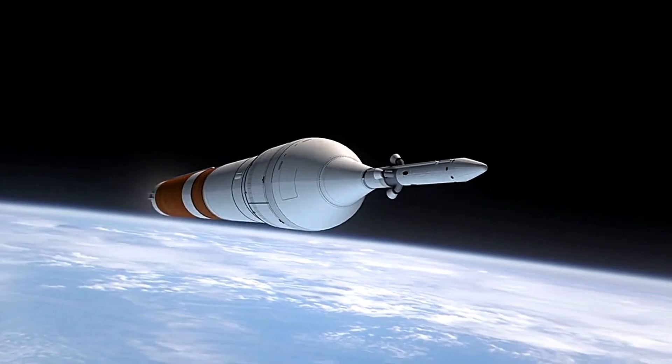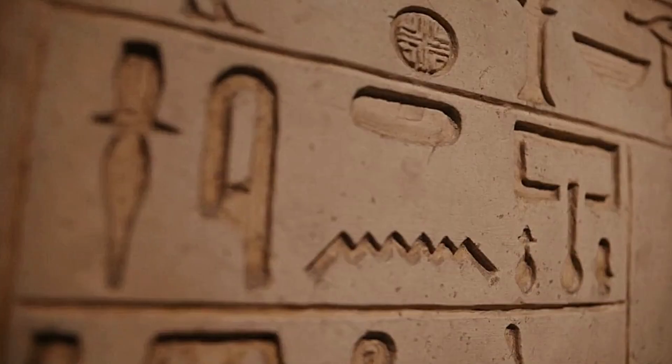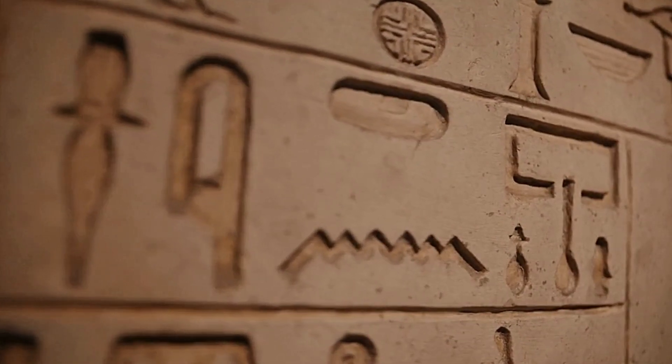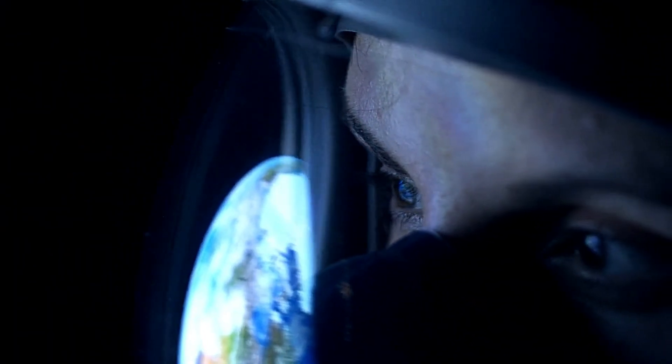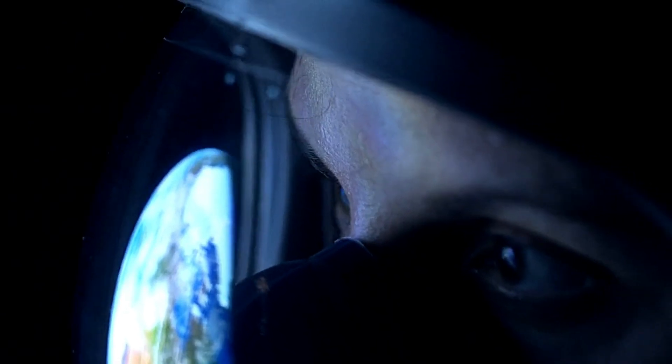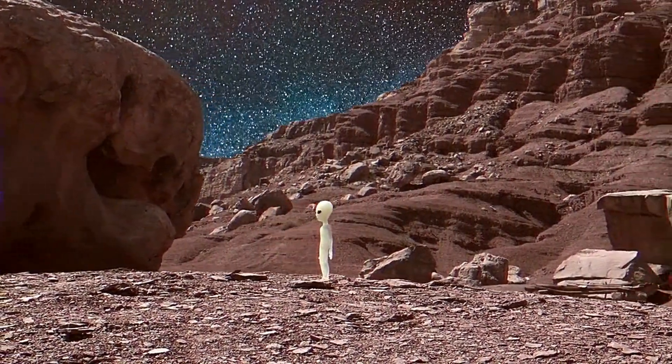The Fermi Paradox is one of the most enduring mysteries in astrophysics, named after Enrico Fermi, the Italian physicist who first proposed it. The paradox asks a simple but profound question: if our galaxy is teeming with intelligent alien civilizations, where are they?